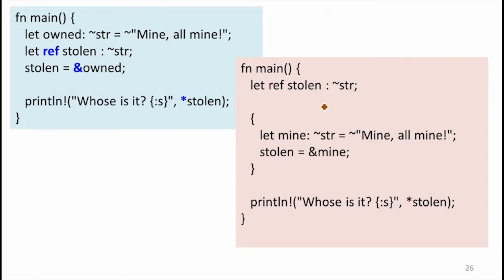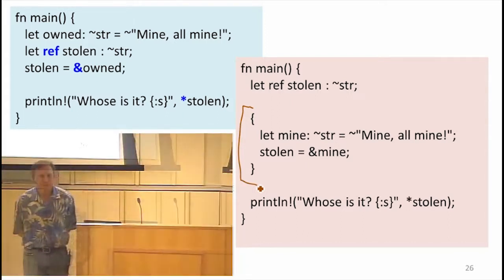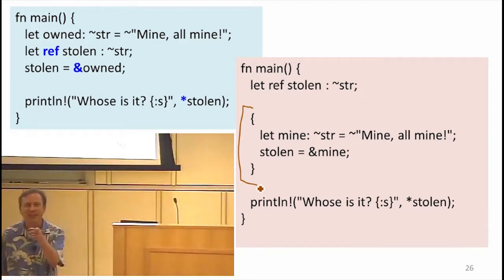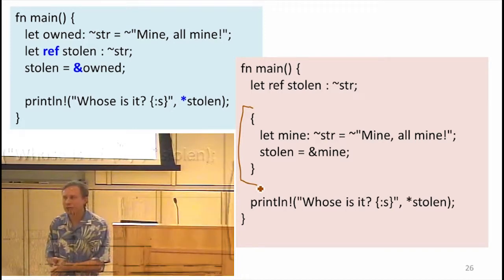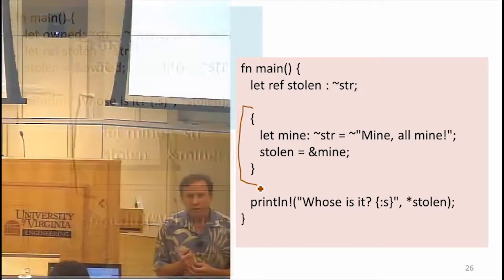What about this? So now I've got almost the same code. I've changed it just by adding this scope around things. Is that still okay? It's got a red background, so that means it's not okay. Why is it not okay? Why is it a problem that it's going out of scope, or that what's going out of scope?